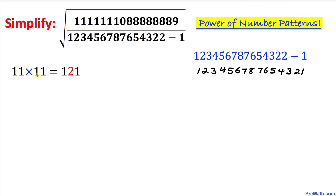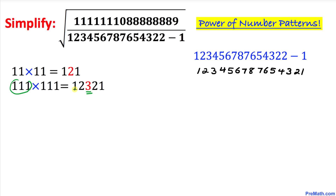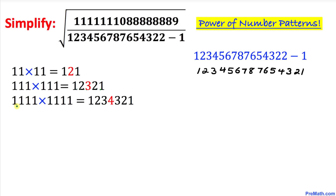Let's start with 11 times 11, which everybody knows is 121. Now, 111 times 111 gives us 1 2 3 2 1. The rule is: there are three ones, so we count up to three in the middle, then count back down — 1 2 3 then 2 1.